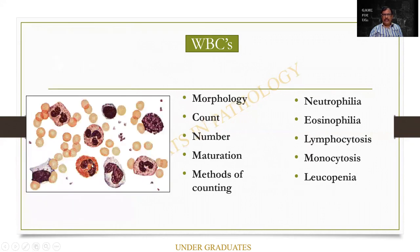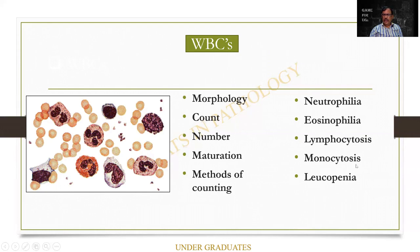This is the first slide I had shown you for WBCs. The morphology of the cell is important. What is the cell you are seeing? You will have to do a counting — the number of them. What is the maturation? And what are the different methods of counting? If normal, fine. If increased, it can be neutrophilia, eosinophilia, lymphocytosis, or monocytosis. If decreased, it can be leukopenia.